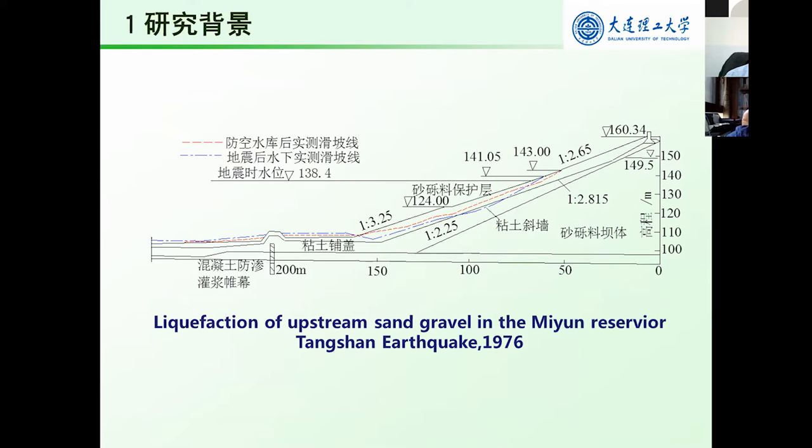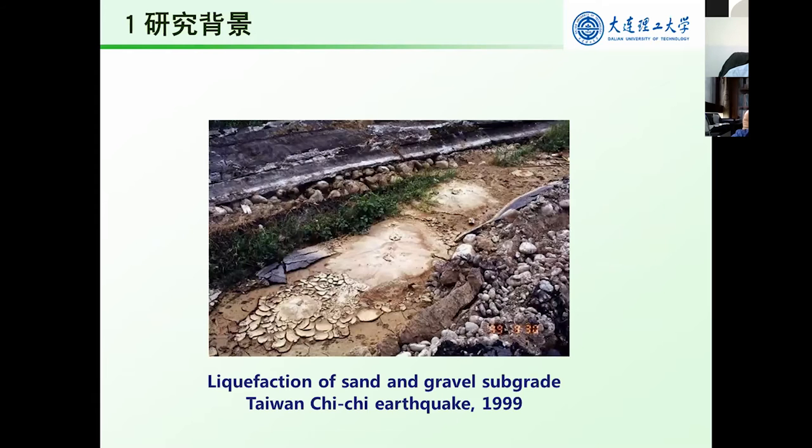In 1976, liquefaction happened on the upstream in Minyuan Reservoir during the Tangshan earthquake with upstream flow. This is liquefaction of sand gravel subgrade in the Chi-Chi earthquake in 1999.